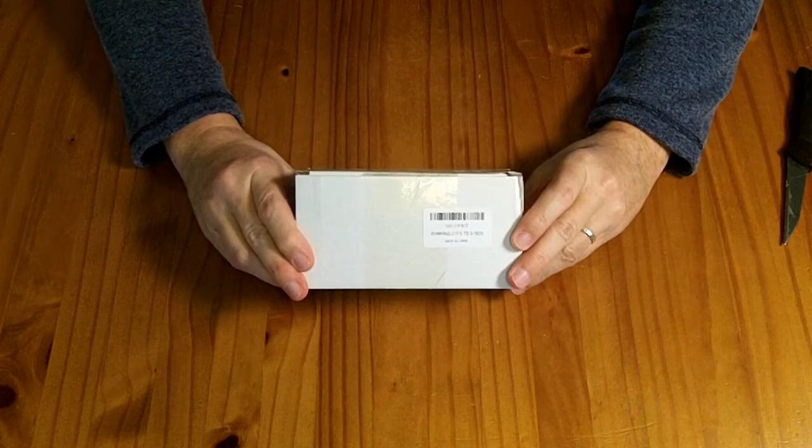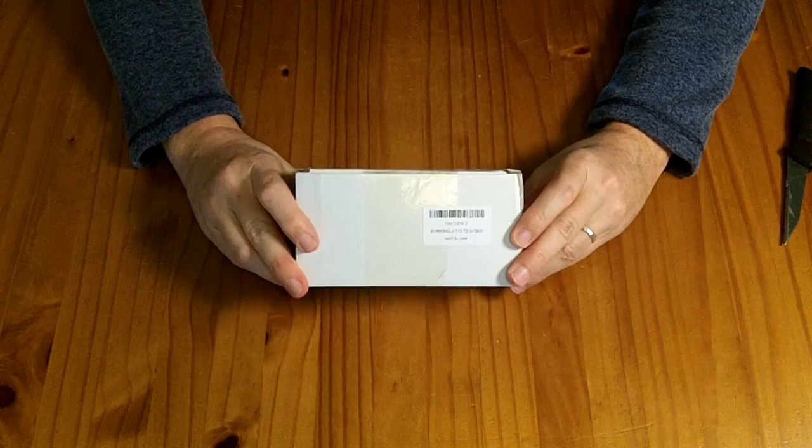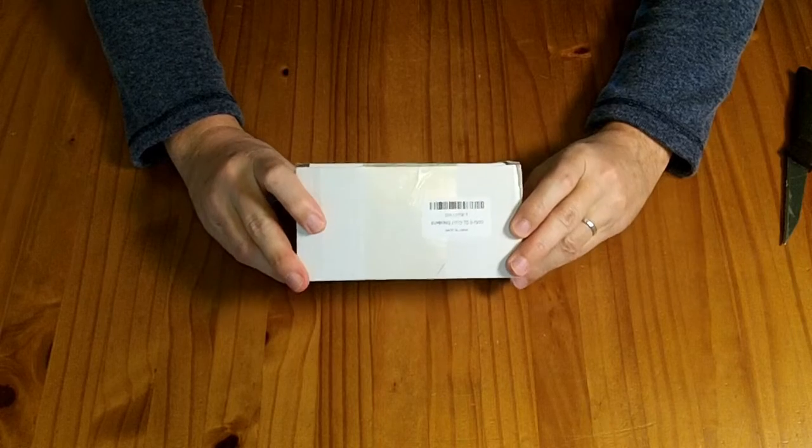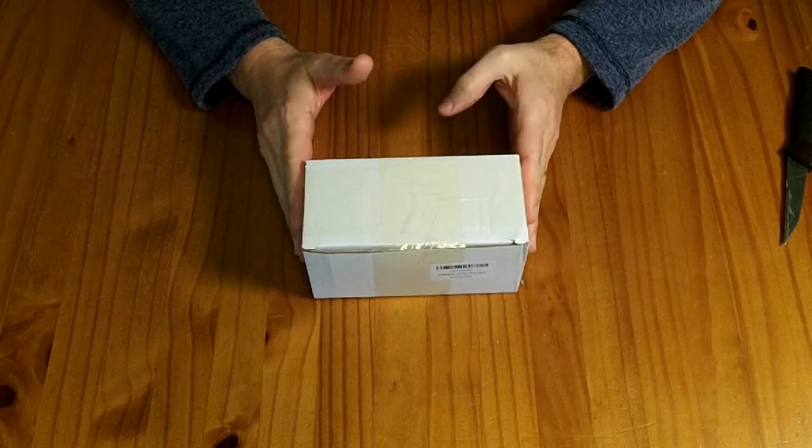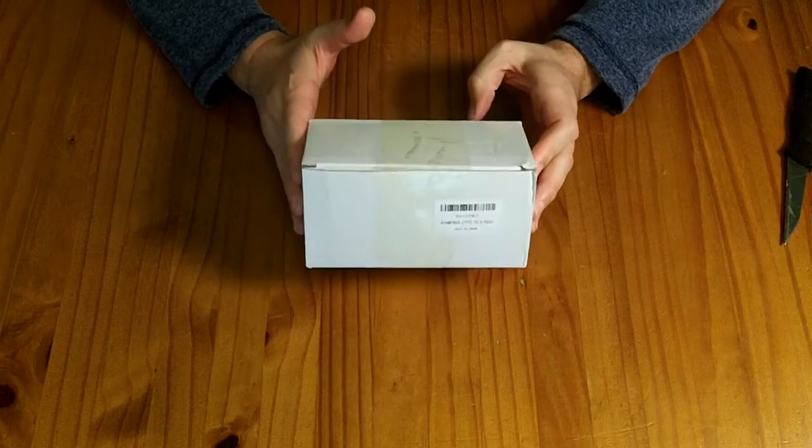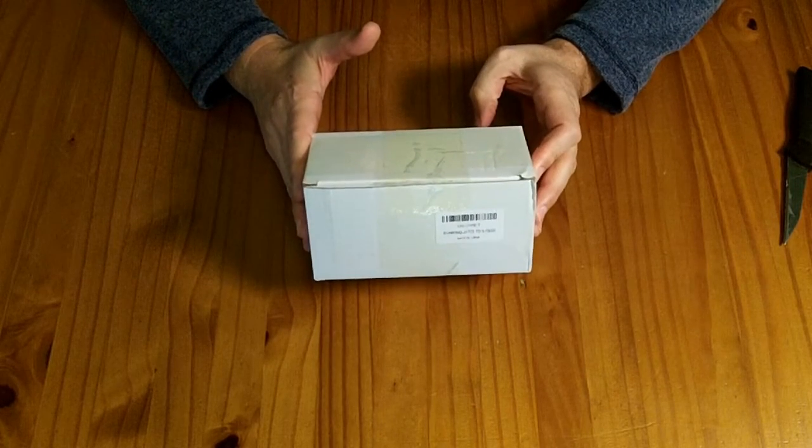This is an EV Hiking J1772 to NEMA 515 or 520 outlet. It basically lets you pull 240 volts AC out of a J1772 like an electric vehicle charger.